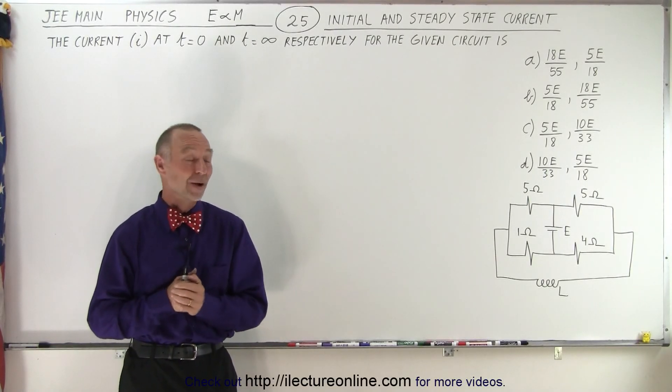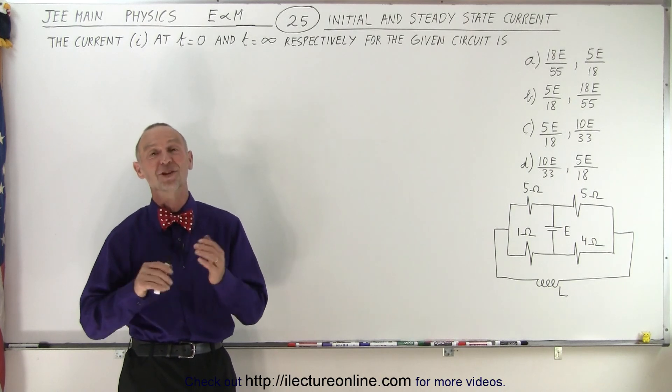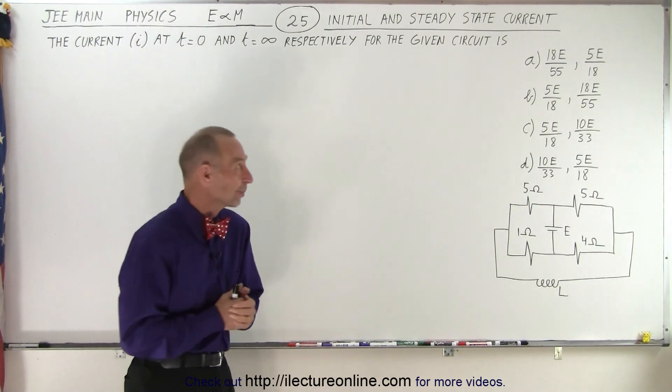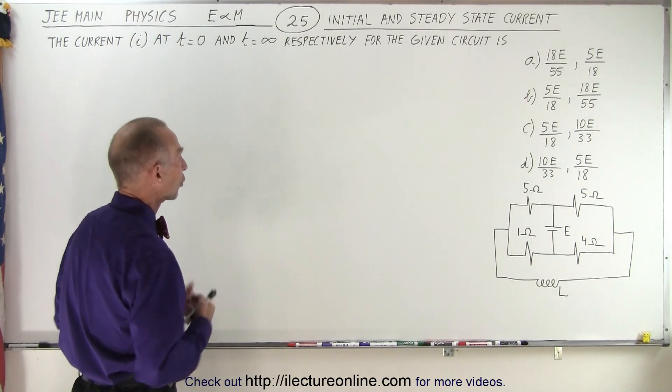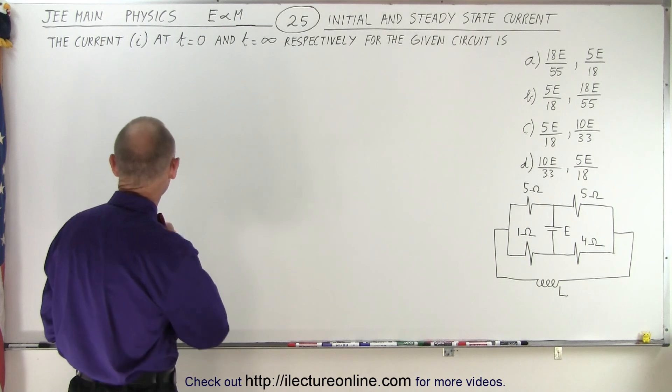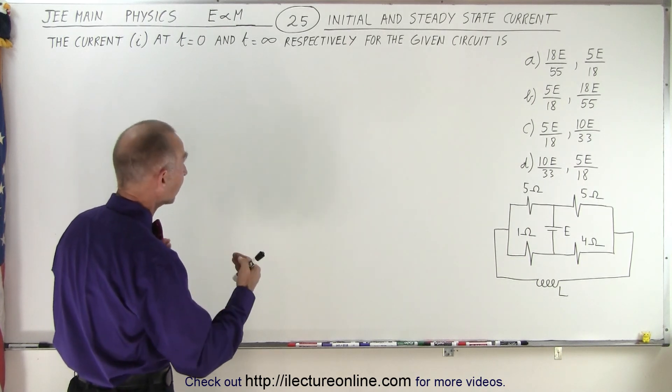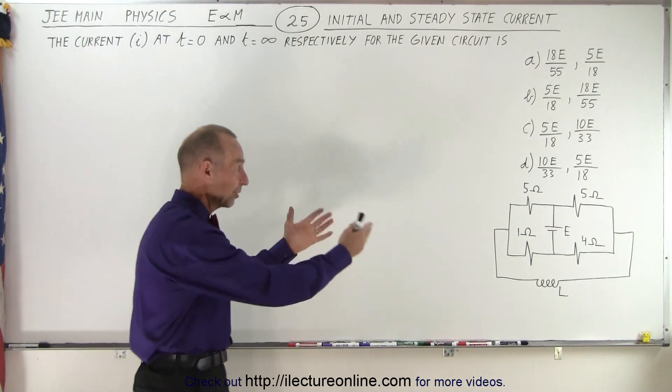Welcome to our lecture online. Now here's a problem I really like. This is a nice problem. It came out of the JE main exams. And let's read it together to make some sense out of it. It deals with the initial and steady state current of a circuit. The current I at t equals zero and t equals infinity respectively for the given circuit is, and they give us four possible answers and here's the circuit.